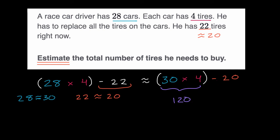And then you subtract 20 from that. Well, 120 minus 20, that is going to be 100. So he roughly needs, if I were to estimate the total number of tires he needs to buy, it would be about 100 tires.